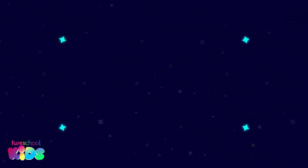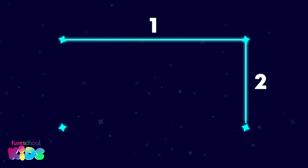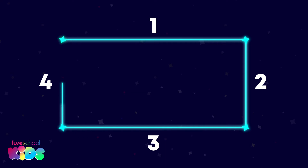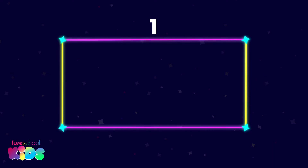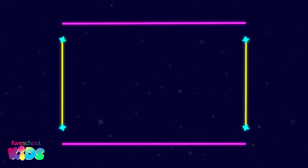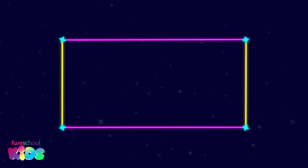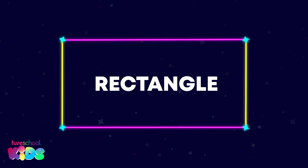Look at these stars. Joining them makes a shape that also has 1, 2, 3, 4 sides. Do you think it is a square? They look similar, but the 4 sides of our new shape are not the same length. So it is not a square. It has 2 equal longer sides and 2 equal shorter sides. Opposite sides are equal. It is a rectangle.